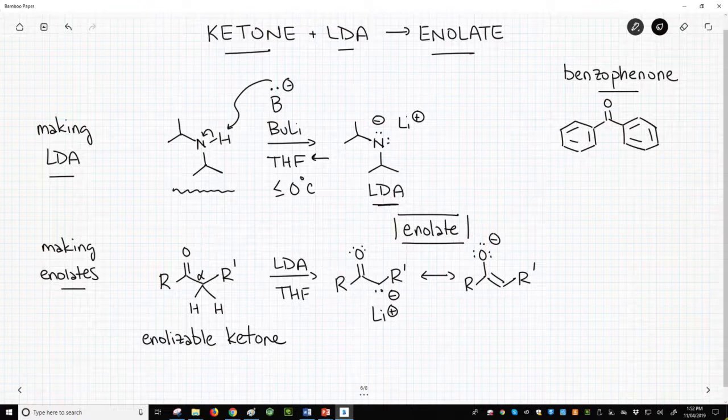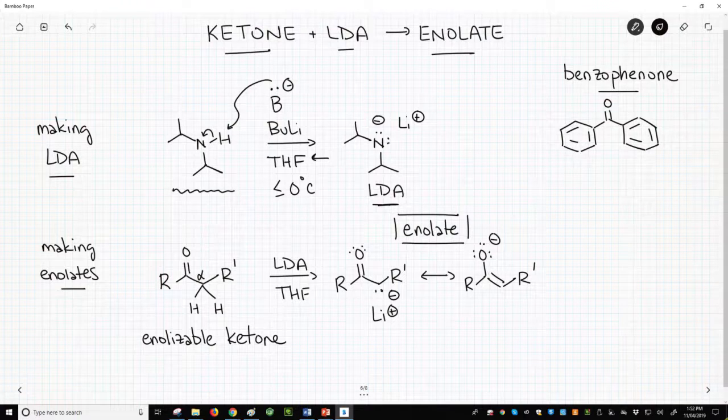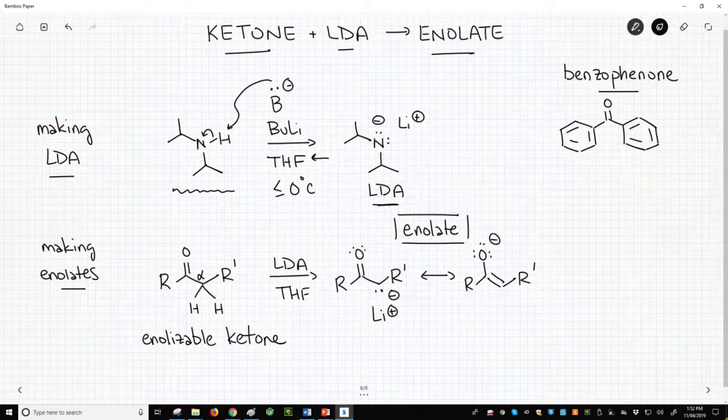The end result of this reaction is a fresh solution of LDA and THF, which can then be used for making enolates. That brings us to the lower reaction. To make an enolate, we start with a ketone.